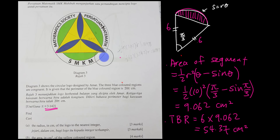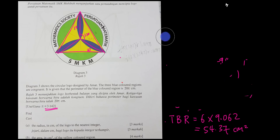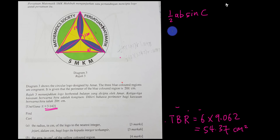Next I find the area of the triangle. The easiest way: since the radius is 10, and the angle between two radii is 120 degrees, the yellow triangle is formed by three smaller triangles. I find one triangle's area and multiply by three. The formula is: Area = ½ab sin C.